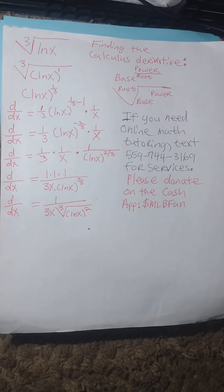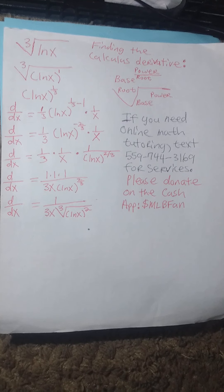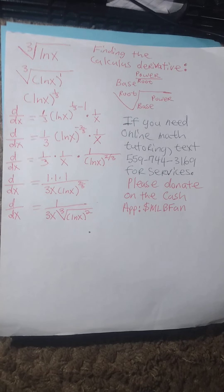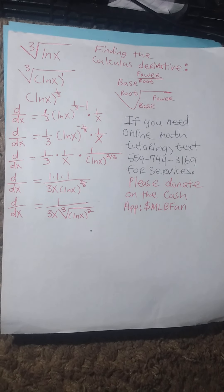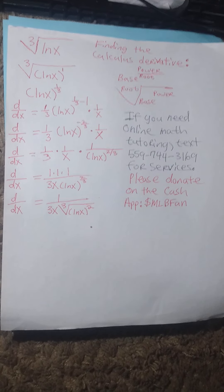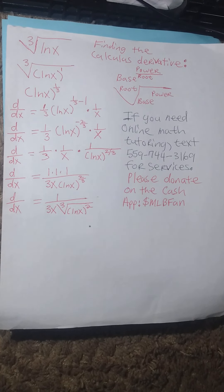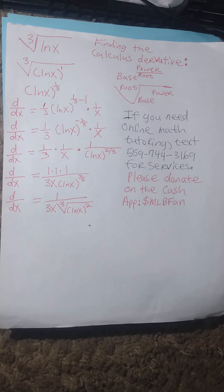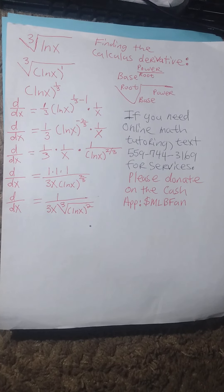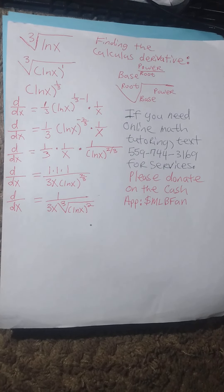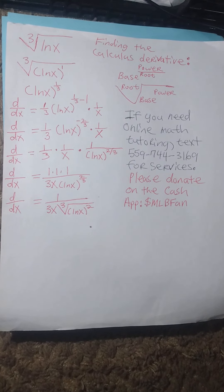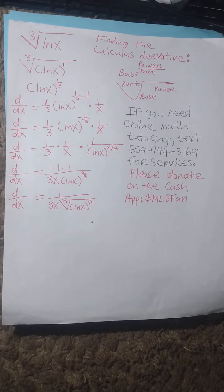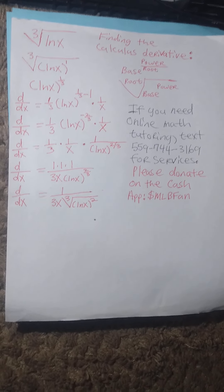Now we can rotate factors because in math there are properties in the form of associative and commutative. So I can rewrite the derivative as 1/3 times 1 divided by x, times — following the laws of negative exponents — natural log of x to the power of negative 2/3 becomes 1 divided by natural log of x to the power of 2/3.